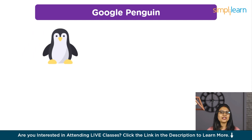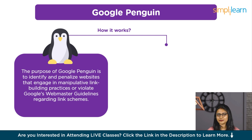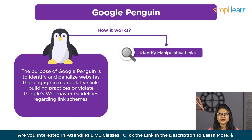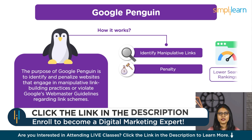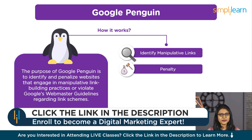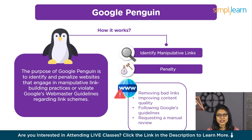Google Penguin: The Google Penguin algorithm is part of Google's search algorithm that was introduced in April 2012. Its primary purpose is to identify and penalize websites that engage in manipulative link building practices or violate Google's webmaster guidelines regarding link schemes. The Penguin algorithm works by scanning websites' backlink profiles to identify unnatural or manipulative links, such as those from low-quality or spammy sites, excessive link exchanges, and paid links. When it detects such practices, it may penalize the site by lowering its ranking in search results, sometimes resulting in manual penalties. Penalized sites can recover by removing bad links, improving content quality, and following Google's guidelines, then requesting a manual review.